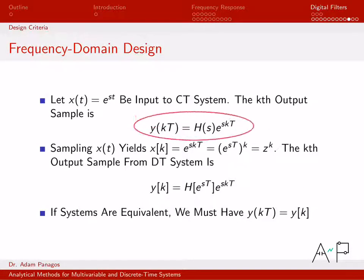So if we go back to our equation, y of t equals h of s e to the st, and I sample that. Remember what it means to sample. I replace little t with k capital T. So that's what I did here. I replaced that t with k capital T, and I replaced the little t here with k capital T. So this right here is the sampled output of my continuous time system.